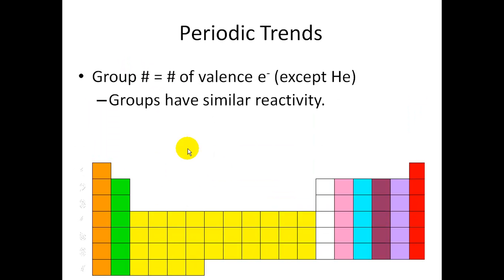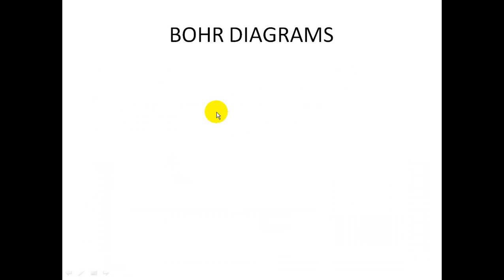There are trends on the periodic table. The group number, which are these numbers here, are giving you the number of valence electrons, which we'll define in the third part. These groups have similar reactivity. So, for example, this red group right here all react the same way, which actually they don't react at all. They're the noble gases. The period number, 1, 2, 3, 4, 5, 6, 7, give you the number of energy levels that that atom has. And that ends our second section.